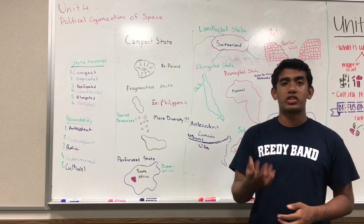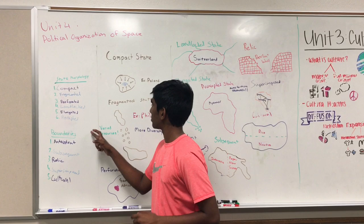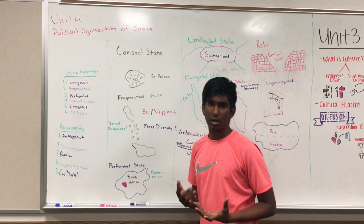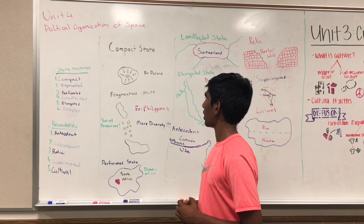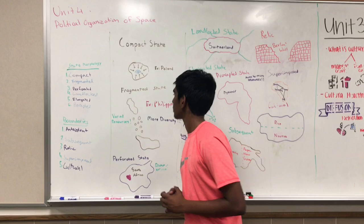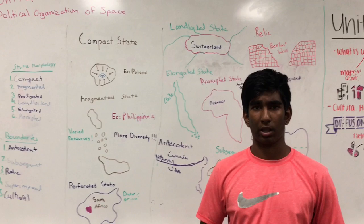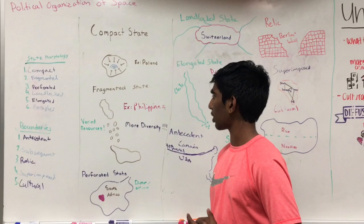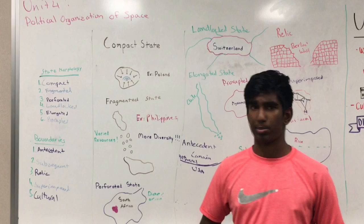Hey guys, my name is Aniketh, and now we'll dive more specifically into state morphology, starting with the compact state. It's just a state with a compact formation, and it usually has good communication amongst its citizens and a united government. A good example of this would be Poland. Moving on to a fragmented state — an example of this would be the Philippines — it's essentially a series of islands or fragmented land areas. This usually leads to varied resources and a lot of diversity among the citizens in all aspects: economically, politically, and socially.